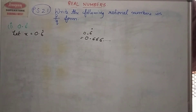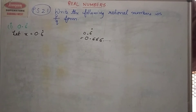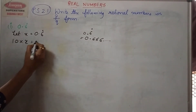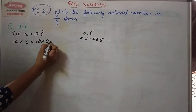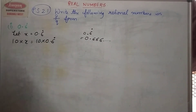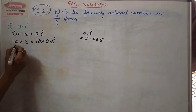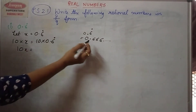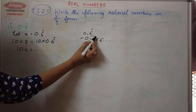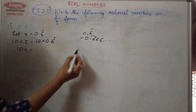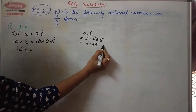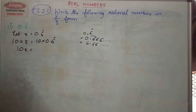Since there is only one number after the decimal point, I am going to multiply by 10. So this will be 10 into x, and this will be 10 into 0.6. When I multiply 10 into x I get 10x, and when I multiply by 10 the decimal point shifts by one place, so the answer will be 6.66 and so on.